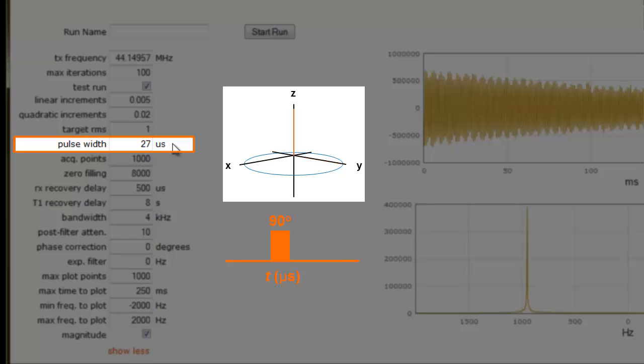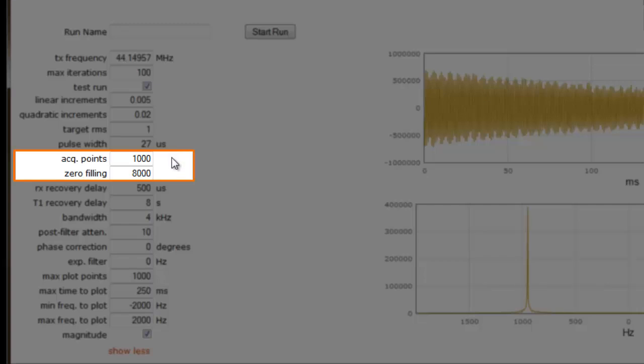Please refer to the test report documentation shipped with your instrument for the correct value. We're going to leave this value set to the test report value. After that, we have the parameters acquisition points and zero filling. Acquisition points is the number of points of the time domain to acquire.